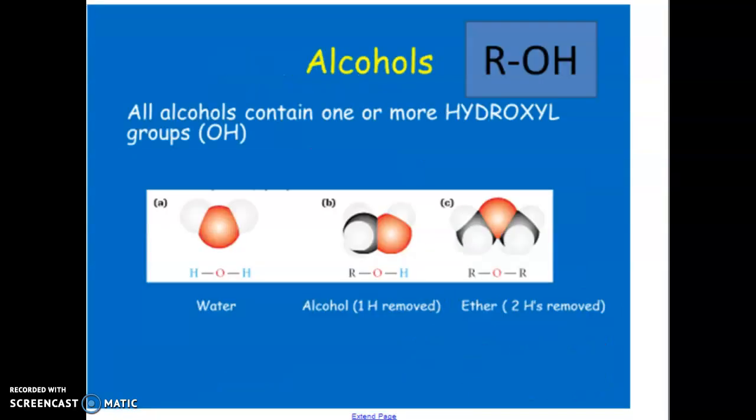We've seen alcohols before. This R is representing really any carbon-based grouping. So an alcohol is when you have a hydroxyl group on a carbon structure. So where does this hydroxyl come from?